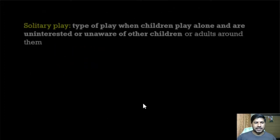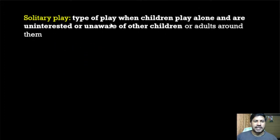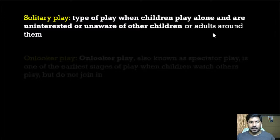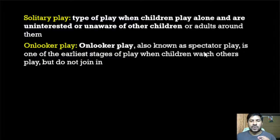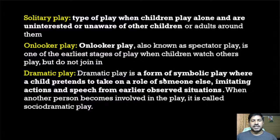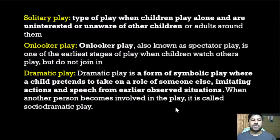To summarize the four types of play: solitary play — child plays alone, unaware of others; onlooker play — child watches others play but doesn't join; parallel play — children play side by side without influencing each other; dramatic play — child pretends to be someone else, imitating actions. If two children do this together, it is called socio-dramatic play.